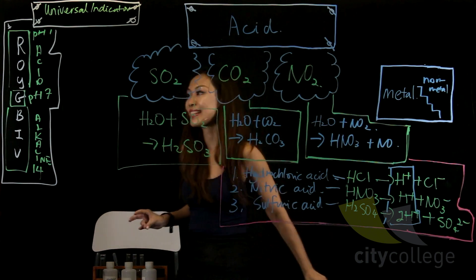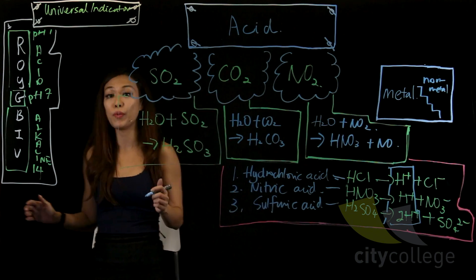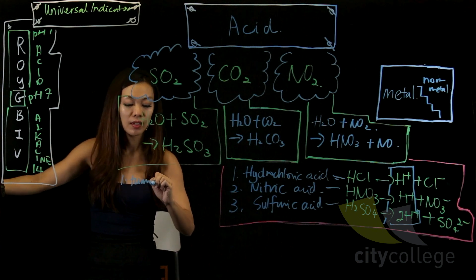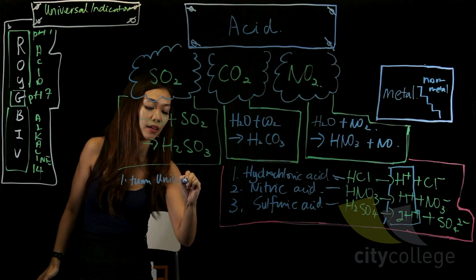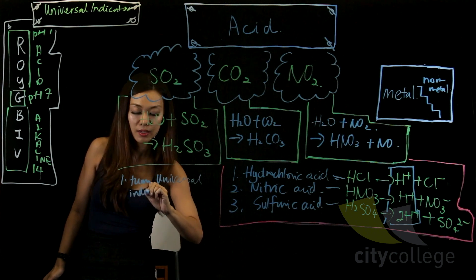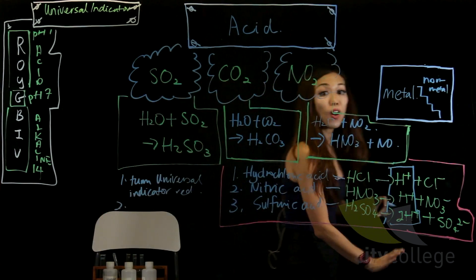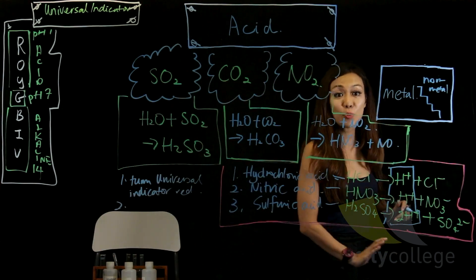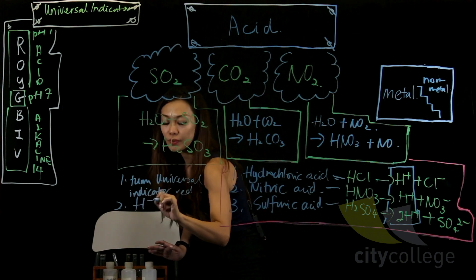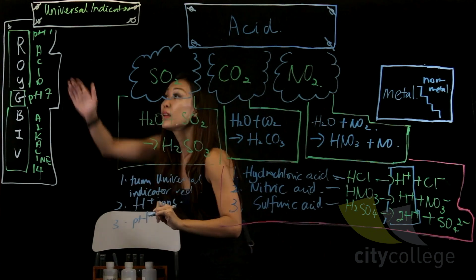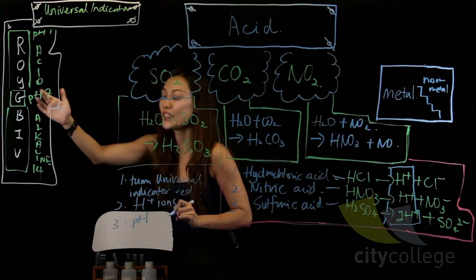So what are the properties of acid? Physical properties of acid. Well, first of them, one of them is turns universal indicator red. Secondly, can you see over here, they all have what ions? H+ ions. pH range from zero or one to six.